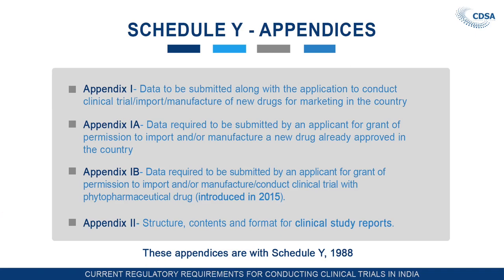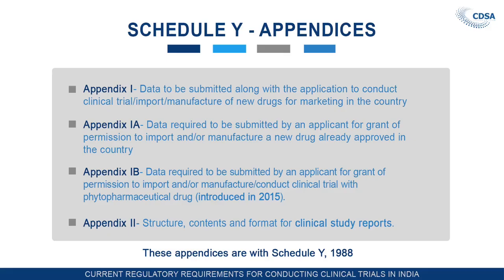Appendix 1 is data to be submitted along with the application to conduct clinical trial for import or manufacture of new drug for marketing in the country. All these requirements needed while submitting the application for clinical trial for a new drug to be imported or manufactured are given in this schedule. Appendix 1A covers data required to be submitted by an applicant for grant of permission to import and/or manufacture a new drug already approved in the country.